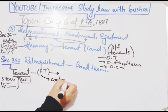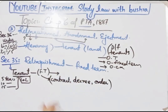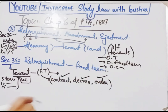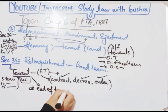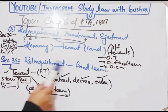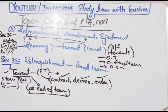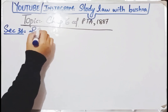toh unke darmiyan tenancy ka jo contract hua hai, chahe kisi contract ke natije mein ho, court ki kisi decree ke through ho, ya kisi competent authority ke order ke under ho — uski relinquishment kaise hogi? Jaise hi wo time period expire ho jaye, yani jitne arse ke liye wo zameen li thi uska arsa mukammal ho jane ke baad automatically, without notice, relinquishment ho jayegi. Tenant ko landlord ko notice dene ki koi zaroorat nahi hai.